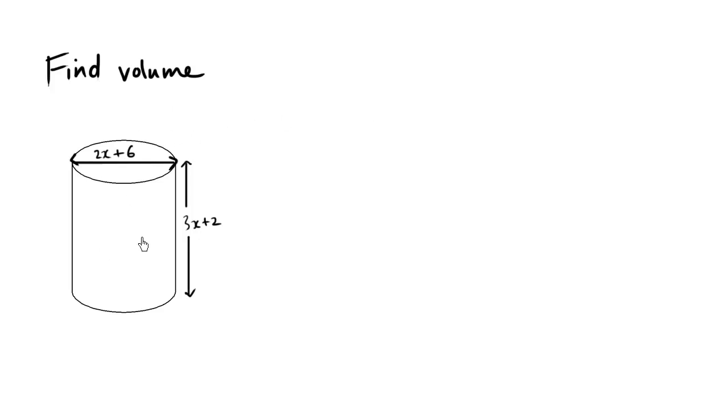Let's find the volume of the cylinder. We know that the volume of a cylinder formula is volume of a cylinder equals the area of the circle. The area of the circle is pi r squared times the height. When you have the area times the height, you get the overall volume of the cylinder.